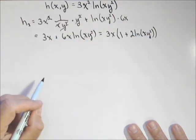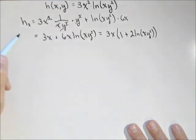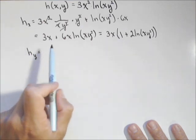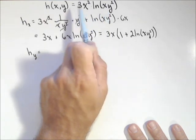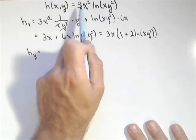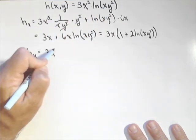When we go to find our second order partials, we wanted to have it fairly simplified. Probably either one of these will be useful. Now let's find our first order with respect to y. So now it's no longer a product, or a product that requires product rule because we're thinking of these x's as constants.